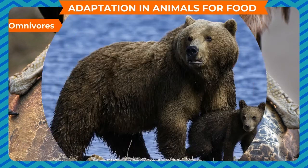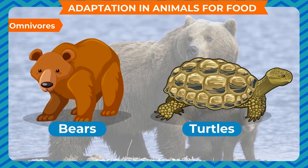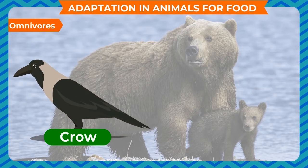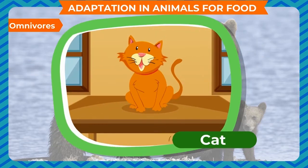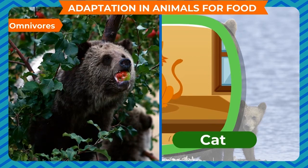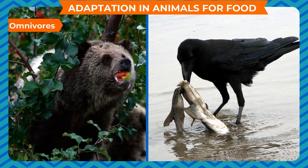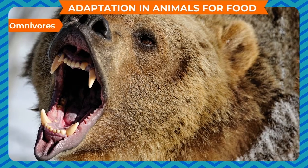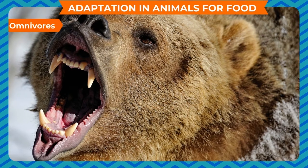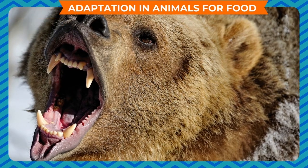Omnivores such as bears, turtles, crows, dogs, cats, etc. eat plants as well as flesh of other animals. They have both sharp and flat teeth to eat a variety of food.